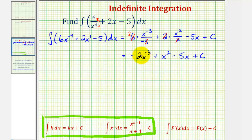Let's rewrite this first term using a positive exponent. If we put this over one and move x to the negative three down to the denominator, it'll change the sign of the exponent. So we have negative two divided by x to the third plus x squared minus five x plus c.